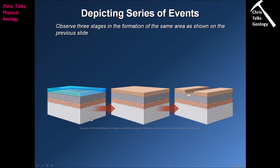We can see that the next layer contains pieces of the granite. This suggests that the granite formed — magma intruded the earth's crust, cooled down, and solidified — then the rock above was eroded away, the granite became exposed on the surface of the earth, it weathered producing clasts of granite, and those clasts were then included in this overlying layer of rock.